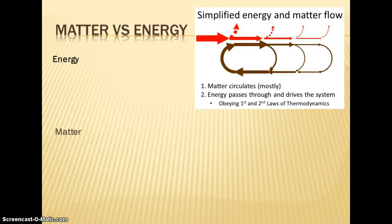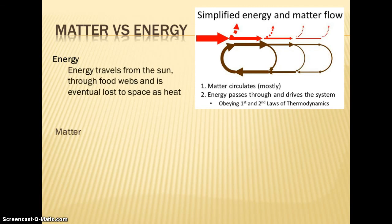Matter can be recycled. Energy, we know, can only be degraded. When we look at this diagram here, when energy flows through an ecosystem, we lose it as heat at each step along the way, whereas matter is going to continue to circulate. We get energy from the sun, travels through the food webs, and through respiration we're constantly losing that energy as heat.